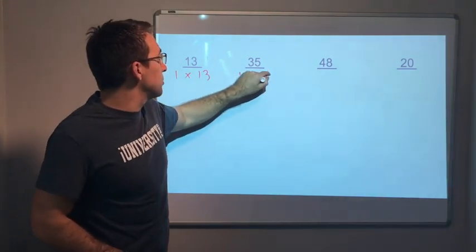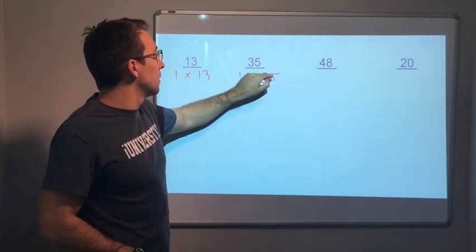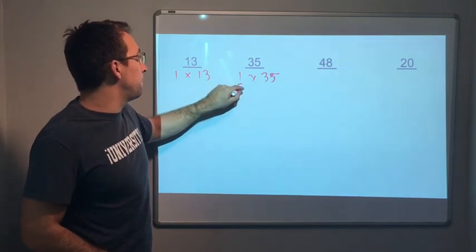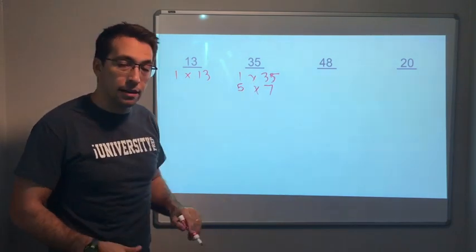35. 1 times 35? 2? No. What about 5 times 7? And that's it.